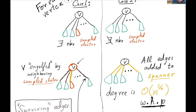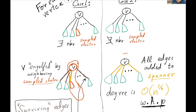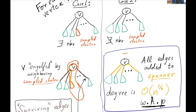In case one, when V is adjacent to a sampled cluster, we simply let that sampled cluster engulf V, creating a larger cluster that includes V. Every other edge coming out of V survives to the next iteration. In case two, if V is not adjacent to any sampled cluster, we add all edges from V to the other clusters to our spanner. In case one, it's easy to see the number of edges added is small — at most one per vertex. Even in case two, we can bound the edges: if V's degree in terms of adjacent clusters were very high, it would be very unlikely that none of them were sampled. Therefore, V's cluster-degree must be O(n^(1/k)) with high probability, the inverse of the sampling probability.